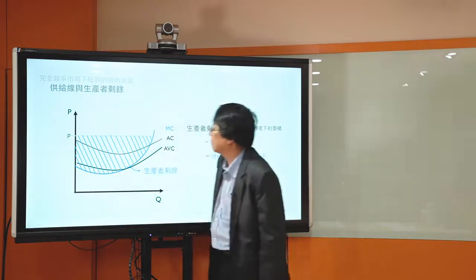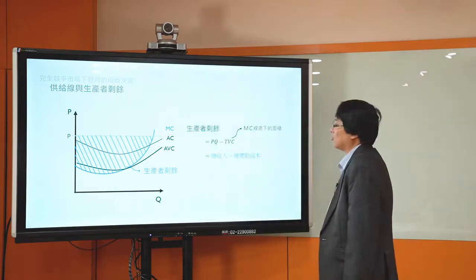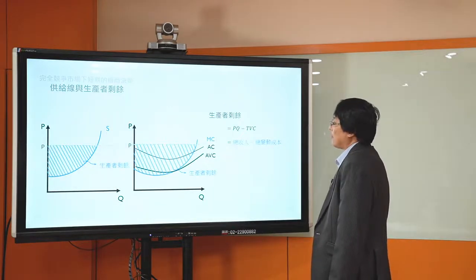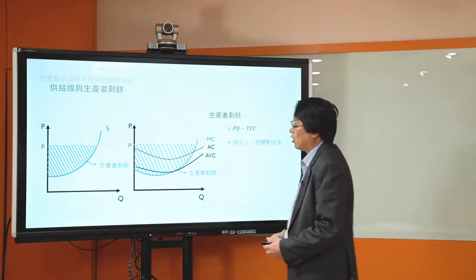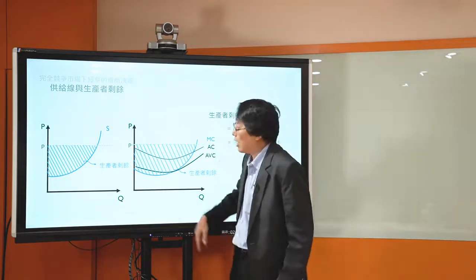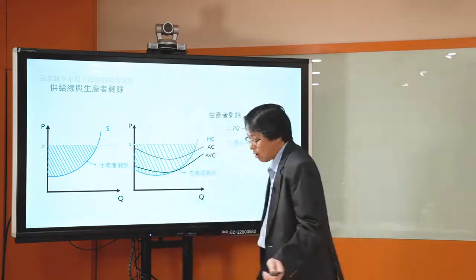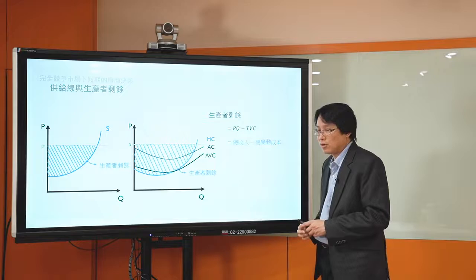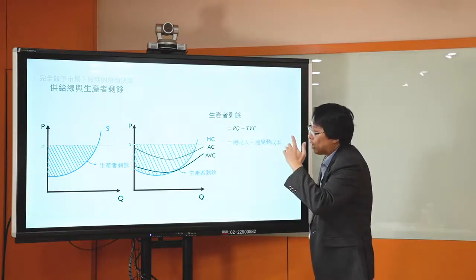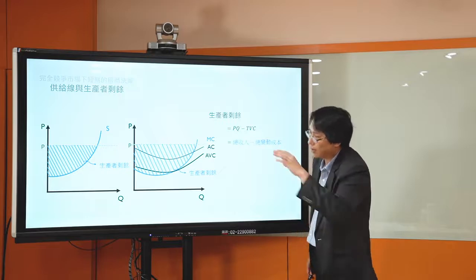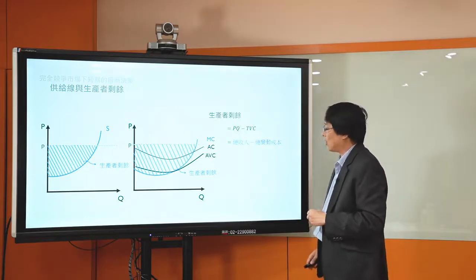生產者剩餘是PQ減掉TVC，是總收入減掉總變動成本。如果你在P等於MC決定你的產量Q，這一大塊PQ減掉總變動成本（即MC底下面積），就得到上面藍色的這一塊，那一塊就叫做生產者剩餘。整個市場的生產者剩餘，就是這個價格線跟這個供給線之間的這個面積。這剛好跟消費者剩餘是對稱的：消費者剩餘是需求線跟價格線之間的面積，生產者剩餘就是供給線跟價格之間的這個面積。